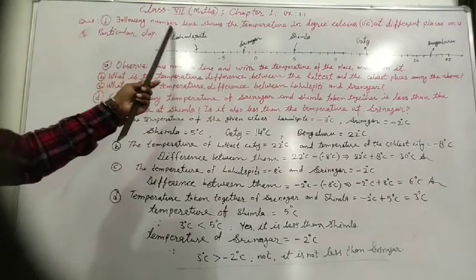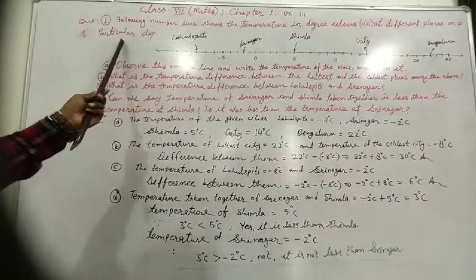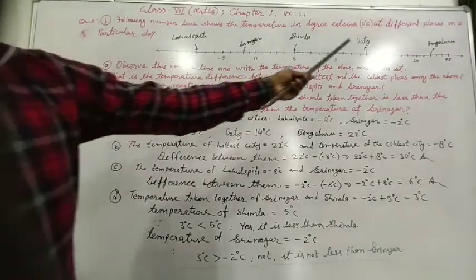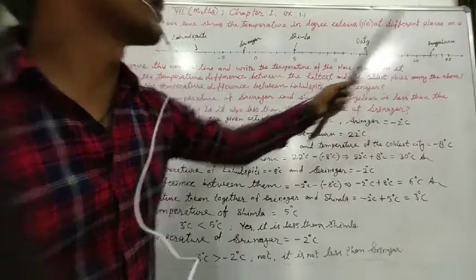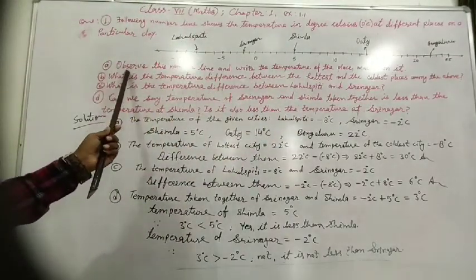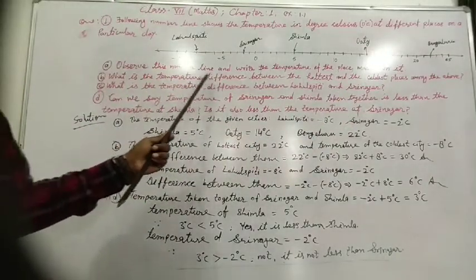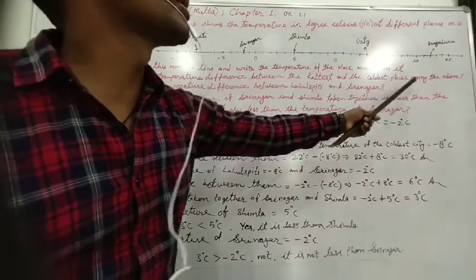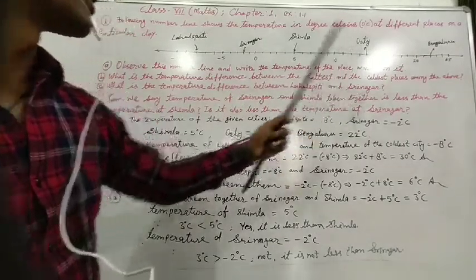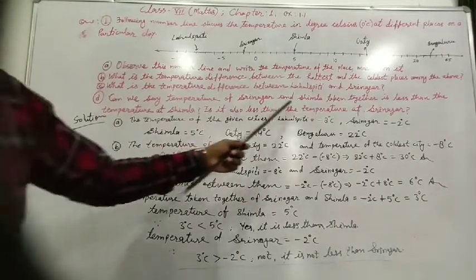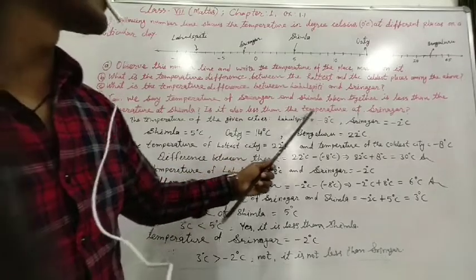Question one: the following number line shows the temperature in degree Celsius at different places on a particular day. The number line shows 0, 5, 10, 15, 20, and 25 on the positive side, and minus 5 and minus 10 on the negative side. Observe this number line and write the temperature of the places marked on it. Part B: what is the temperature difference between the hottest and the coldest places among the above? Part C: what is the temperature difference between Lahul-Spiti and Srinagar? Part D: can we say the temperature of Srinagar and Simla taken together is less than the temperature at Simla? Is it also less than the temperature at Srinagar?